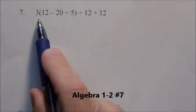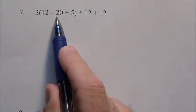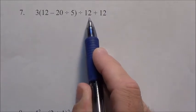Number 7. We have 3 times all this in parentheses, divide by 12, plus 12.